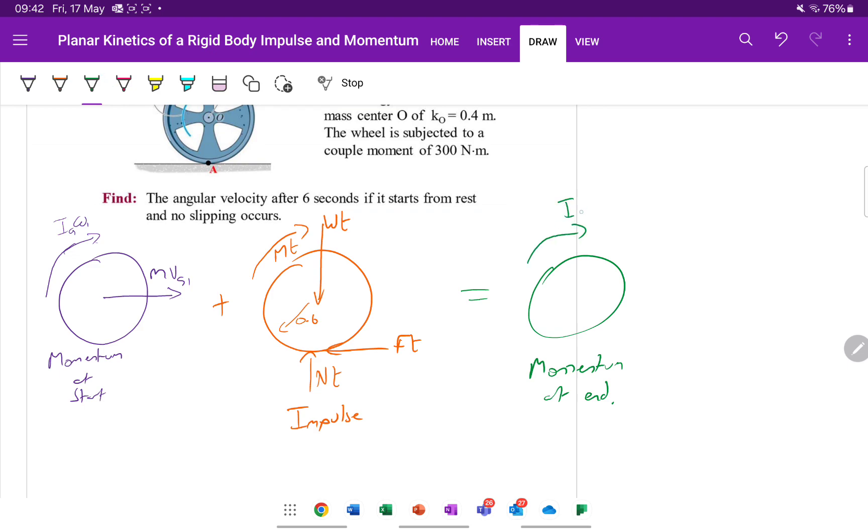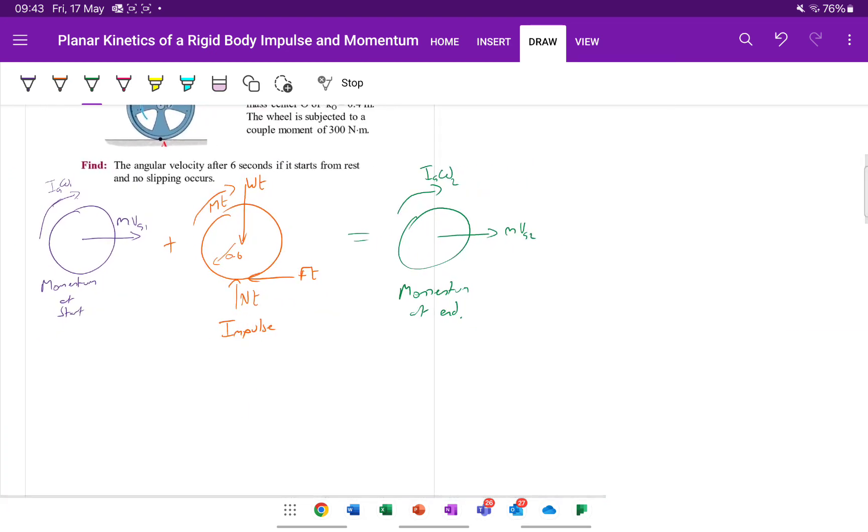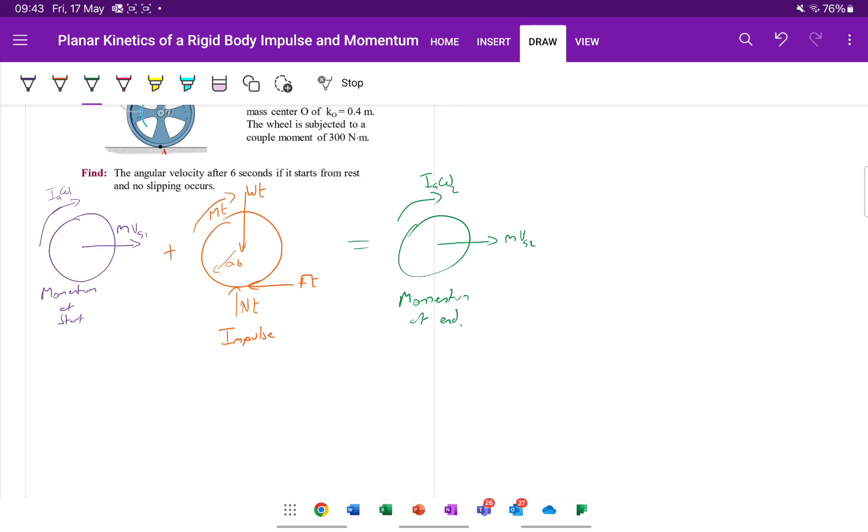And the impulse at the end is just going to be very similar to the start. I, G, omega 2, and M, V, G, 2. So we've drawn our picture. We've got some momentum at the start. Some forces and moments are applied. We get a new momentum at the end. And we could think linear. We could think angular. We've been asked for the angular velocity to find the angular velocity. After 6 seconds, if it starts from rest, and there's no slipping. So we're probably going to focus on the angular aspect. The angular momentum and the angular impulse.